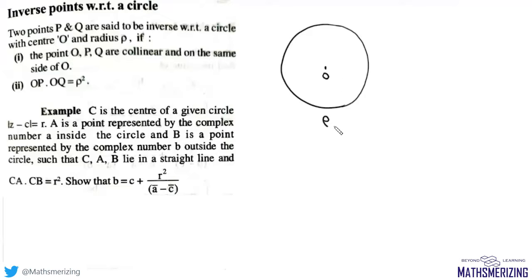Then P and Q are said to be inverse with respect to the circle if O, P, and Q are collinear.